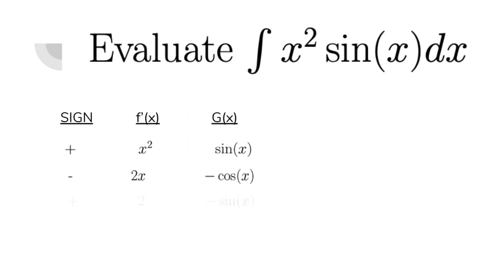And as you can imagine, we'll repeat this process again. Sign this time is positive, since the sign changes. Derivative of 2x is 2, and the integral of negative cosine of x is negative sine of x. And I have to do this process one more time. And you keep doing this process until the f prime column reads 0.